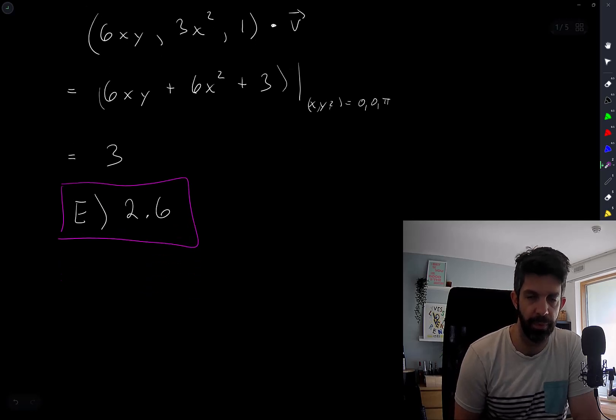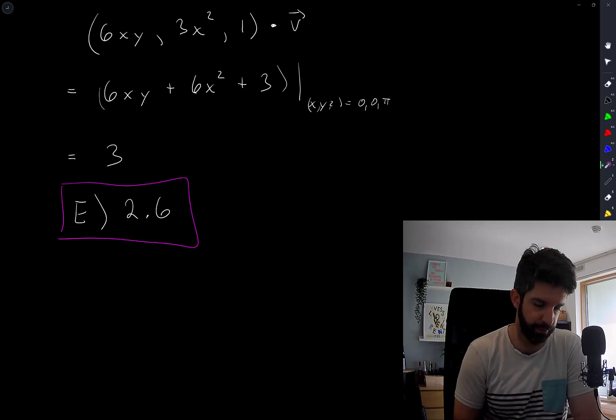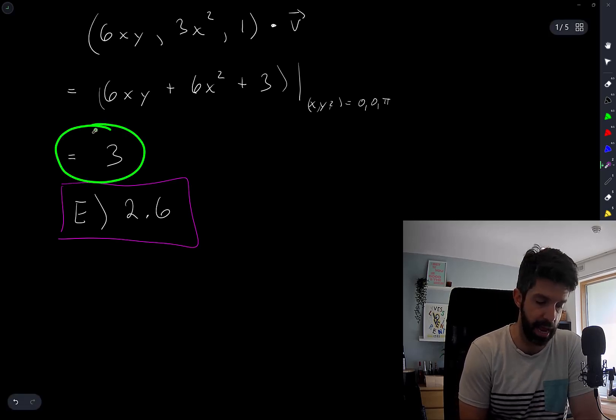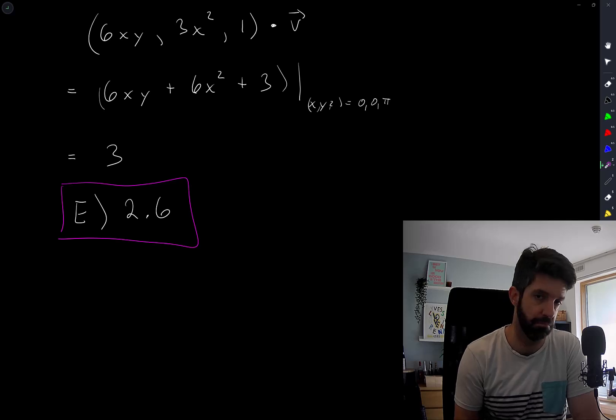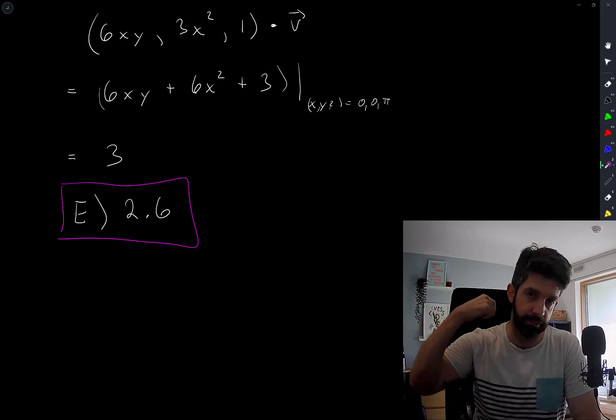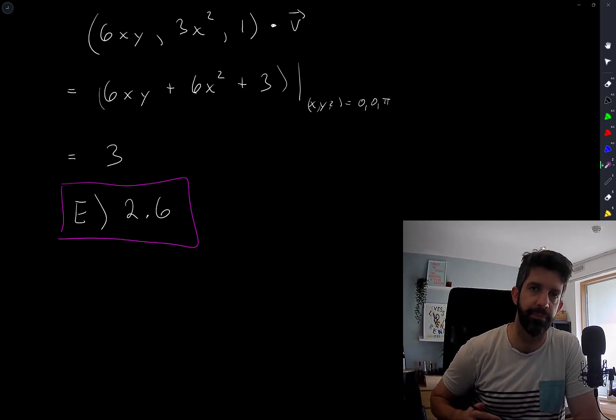I mean, I hope I didn't make any silly algebra or arithmetic mistakes. But the actual gradient, or the actual directional derivative is 3. And of the options listed, 2.6 is the closest one to 3. So that's my answer. If I find a mistake in this, I'll put it down in the description. Thanks for watching.